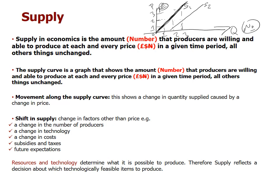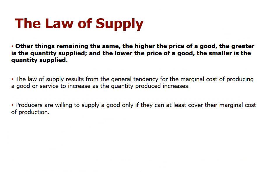Subsidies and taxes also matter — if the government subsidizes production, you can produce more; if the government taxes you more, you produce less. Future expectations play a role too: if producers feel they can sell an item for a higher price in the future, they might withhold supply now. Your resources and technology determine what is possible — supply is a reflection of what is technologically feasible to produce.